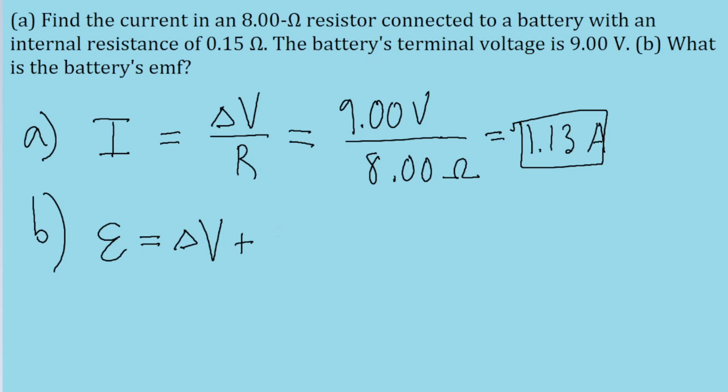So once again, from Ohm's law, that part of the voltage is going to be the current multiplied by the internal resistance. So delta V plus I, which is the current through the circuit that we found in part A, multiplied by the internal resistance of the battery.